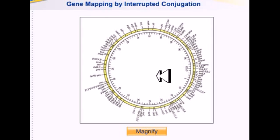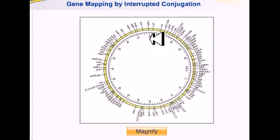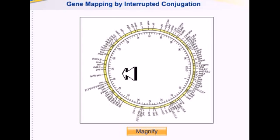For a normal E. coli, the DNA transfer from the HFR bacterial strain to the F- cell takes 100 minutes. So the whole genome is divided into 100 minutes, and from the start point of the F-factor, different genes are placed one after another along that timeline.